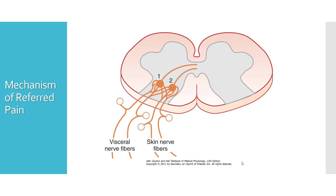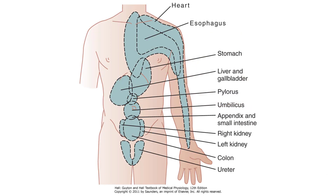During development, the nerve fibers supplying the viscera and supplying the dermatome on the body surface arose from a common origin. Some of the common referred pains are shown in this picture — pain coming from the heart, esophagus, stomach, and so on.